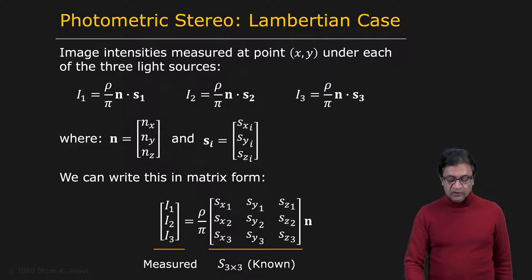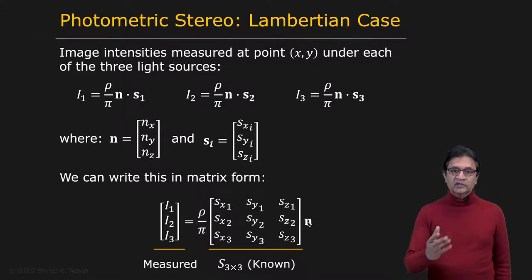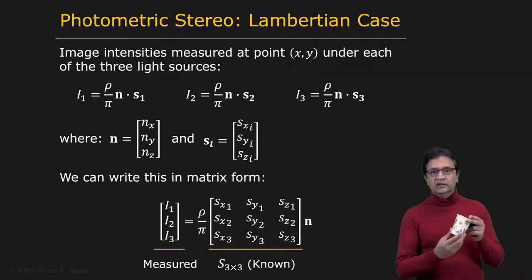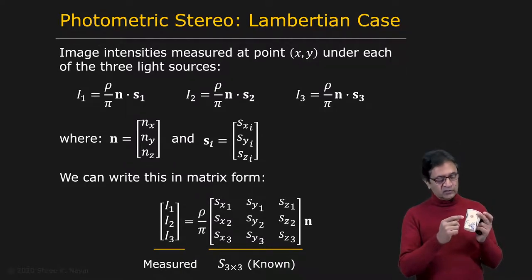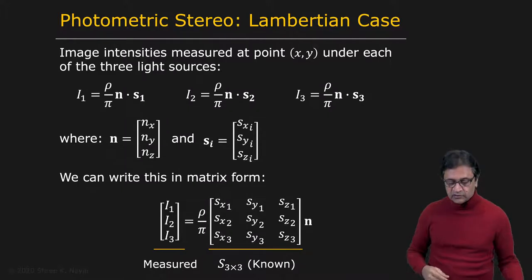The knowns and unknowns: we know the source matrix S — a three by three matrix since we use three light sources — and we have measured the intensity values at each point. What we don't know are the albedo and the normal vector. We assume the albedo can vary from point to point, such as a surface with a printed texture. We want to compute both the surface normal and albedo at each point, and we can do this with just three light sources.